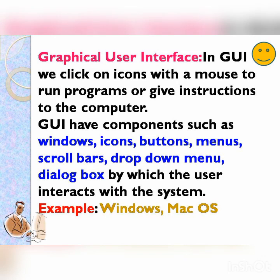In GUI, we click on icons with a mouse to run programs or give instructions to the computer. GUI has components such as windows, icons, buttons, menus, scroll bars, drop down menu, and dialog box, by which the user interacts with the system. For example, Microsoft Windows and Mac operating system are GUI.